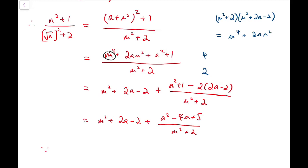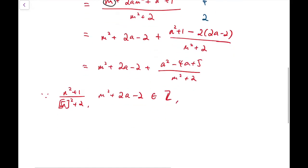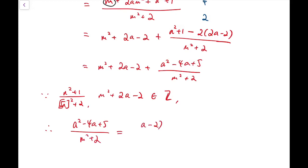Because the left-hand side — which is the given expression — is an integer, that is our condition. And m squared plus 2a minus 2 is also an integer. We know that this expression, which can be written as (a minus 2) whole squared plus 1, over m squared plus 2, is also an integer.